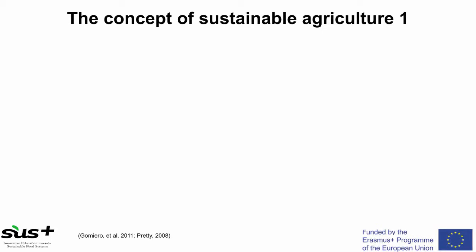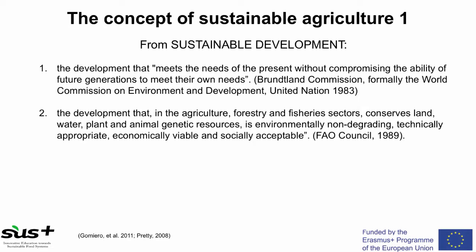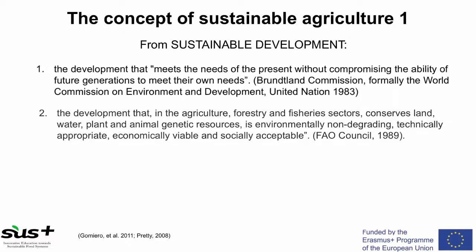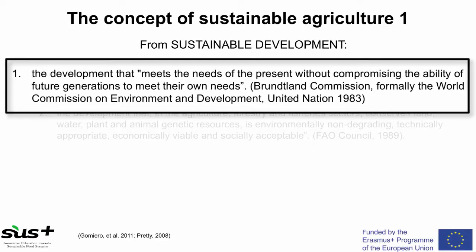The concept of sustainable agriculture derives from the older concept of sustainable development. Here we have two definitions. The first definition comes from the United Nations in 1983, where the Brundtland Commission defined sustainable development as the development that meets the needs of the present without compromising the ability of future generations to meet their own needs.